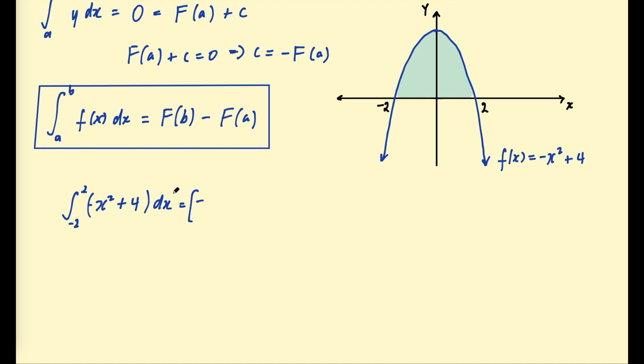We put this antiderivative in square brackets. So this is negative x cubed over 3 plus 4x. And then we put the boundaries on the right hand side of the square bracket. So negative 2 to 2. This indicates you've found the antiderivative now. And the next step is to input the boundaries. So F of 2, substituting in 2 we get negative 8 over 3 plus 8.